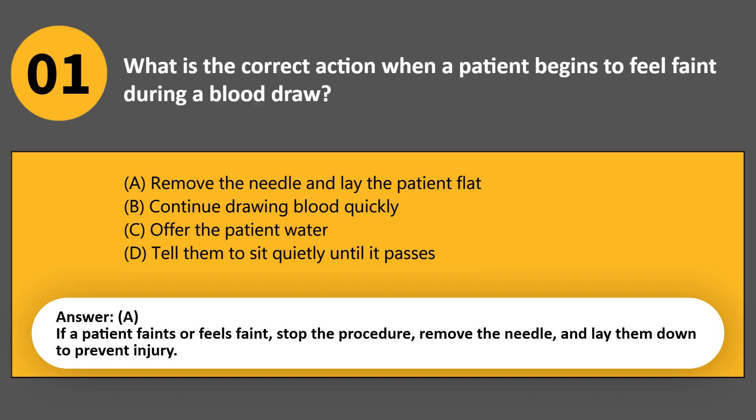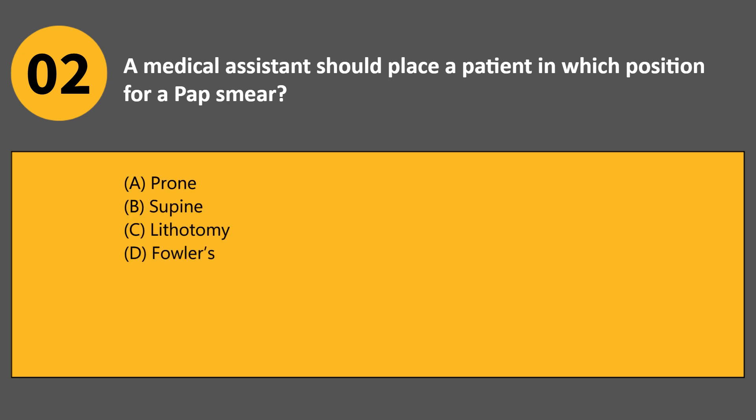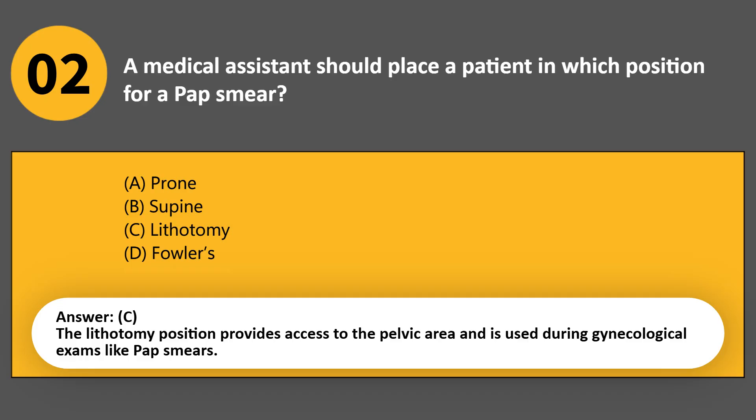A medical assistant should place a patient in which position for a pap smear? A. Prone. B. Supine. C. Lithotomy. D. Fowler's. Answer C. The lithotomy position provides access to the pelvic area and is used during gynecological exams like pap smears.